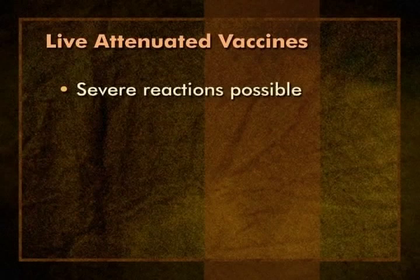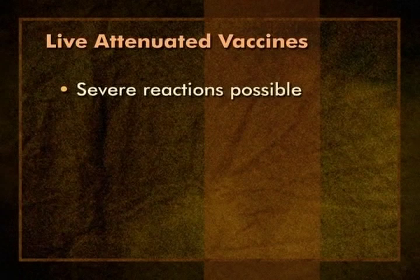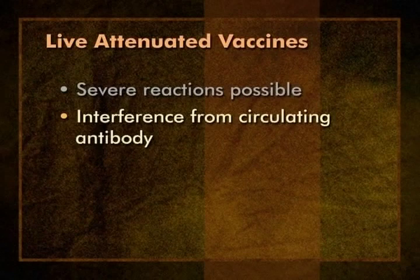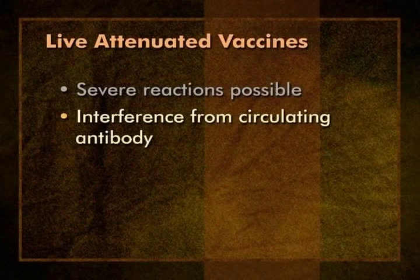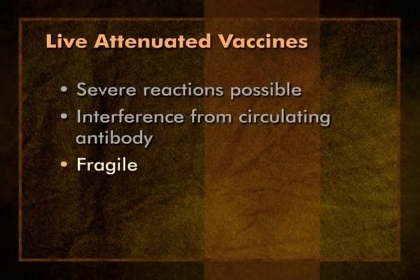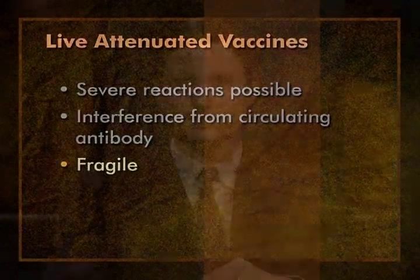Because live vaccines replicate, severe reactions are possible if the immune system cannot eliminate the vaccine organism. Fortunately, these severe reactions are rare and occur mainly when live vaccines are erroneously administered to immunosuppressed persons. An important limitation of some live vaccines, particularly measles vaccine, is interference from circulating antibody. Antibody against the vaccine virus can reduce or eliminate the ability of the live vaccine agent to replicate, and if live vaccines do not replicate, they do not work. Interference by circulating antibody appears to be a problem mainly with injected live virus vaccines. Finally, live vaccines are relatively fragile—they must be stored and handled very carefully or risk reducing or destroying their potency. The virus in that little vial has to be kept viable. If the live agent is dead when you give it, it cannot replicate and it will not be effective.